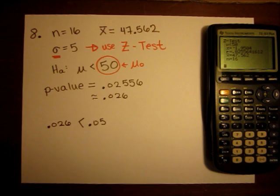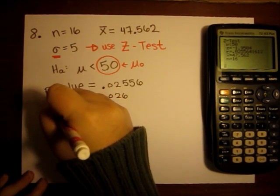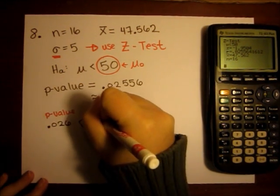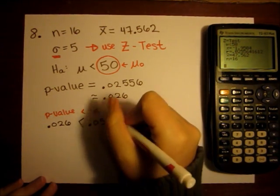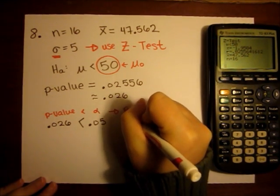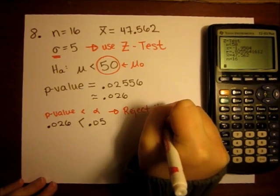So we have a rule that says whenever the p value is less than alpha, p value less than alpha means I'm going to reject the null hypothesis.